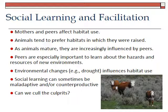Mother and peers affect habitat. Mother was very important in helping animals have fidelity to their home site, but peers were also important as animals went from the Maxfield to the Thompson Creek side. Animals tend to prefer habitats in which they were raised, but as they mature they're increasingly influenced by peers — not unlike humans, who hang out with parents when young and then become increasingly influenced by peers as teenagers. Peers become very important influences, perhaps more important than parents at that point.